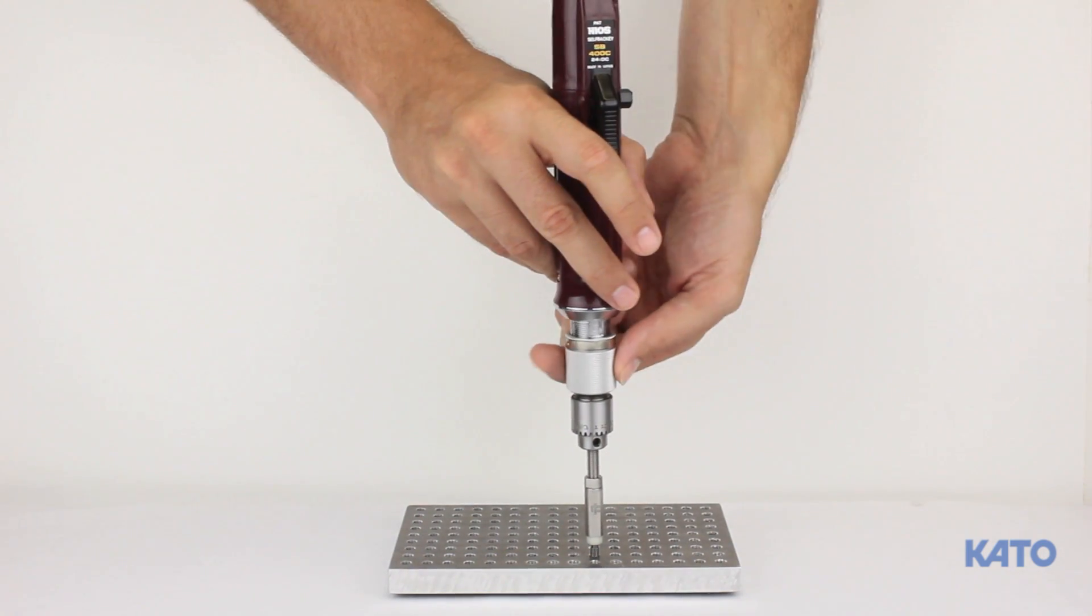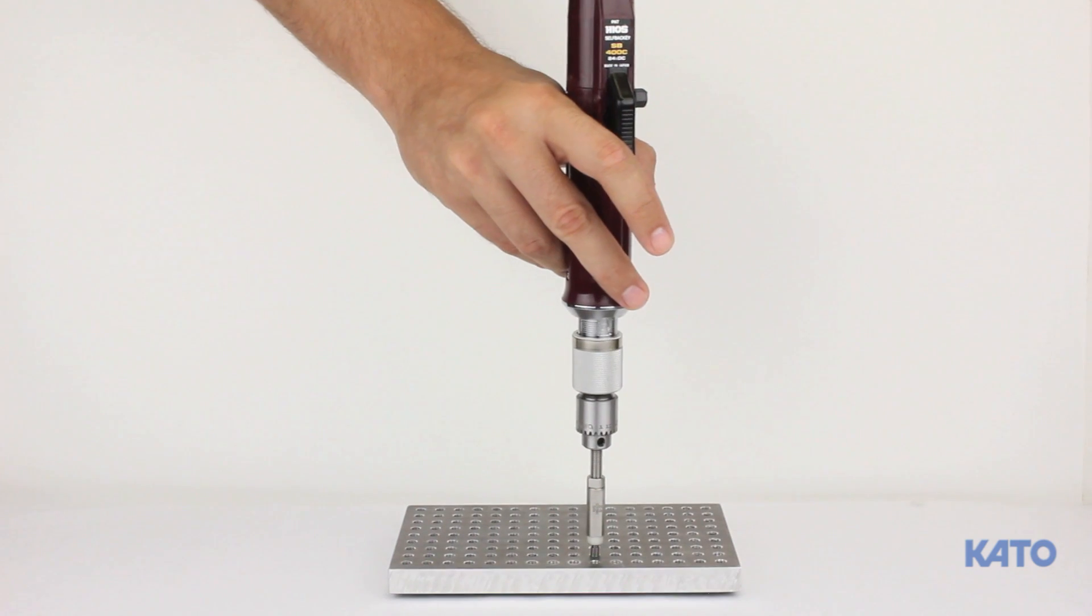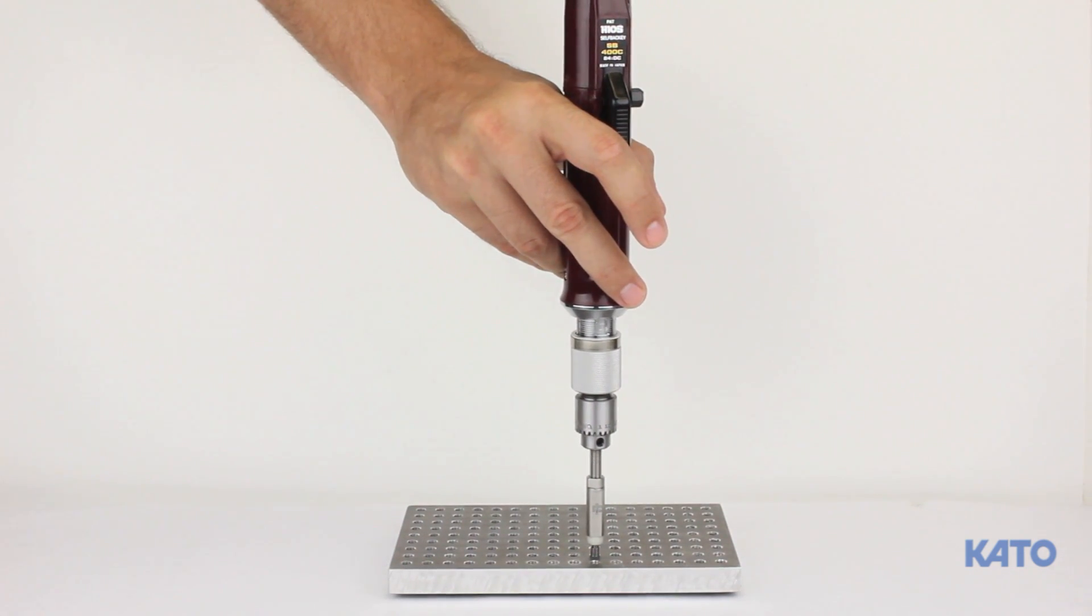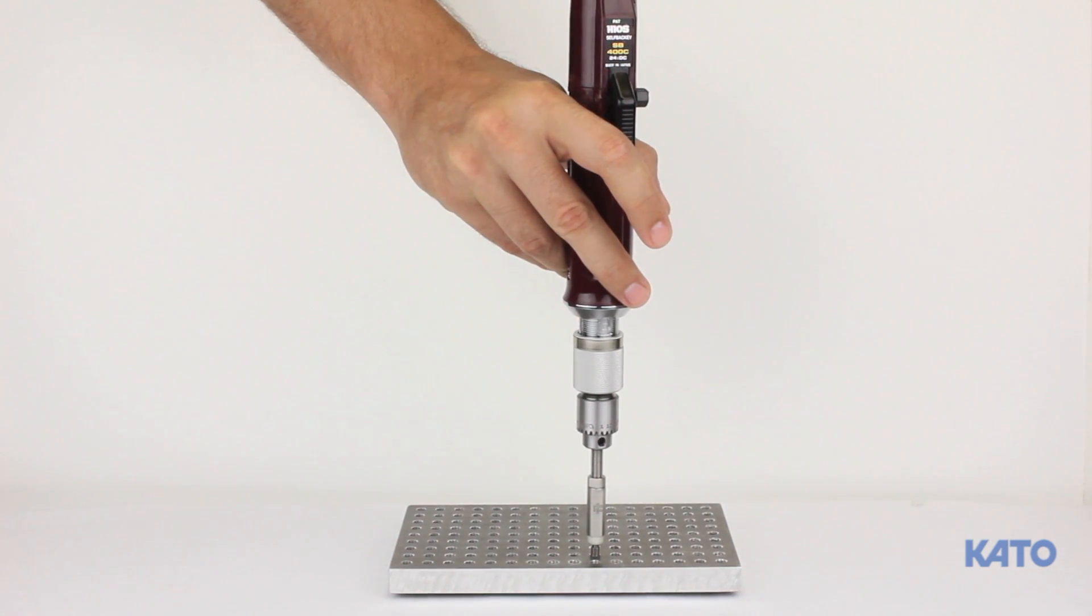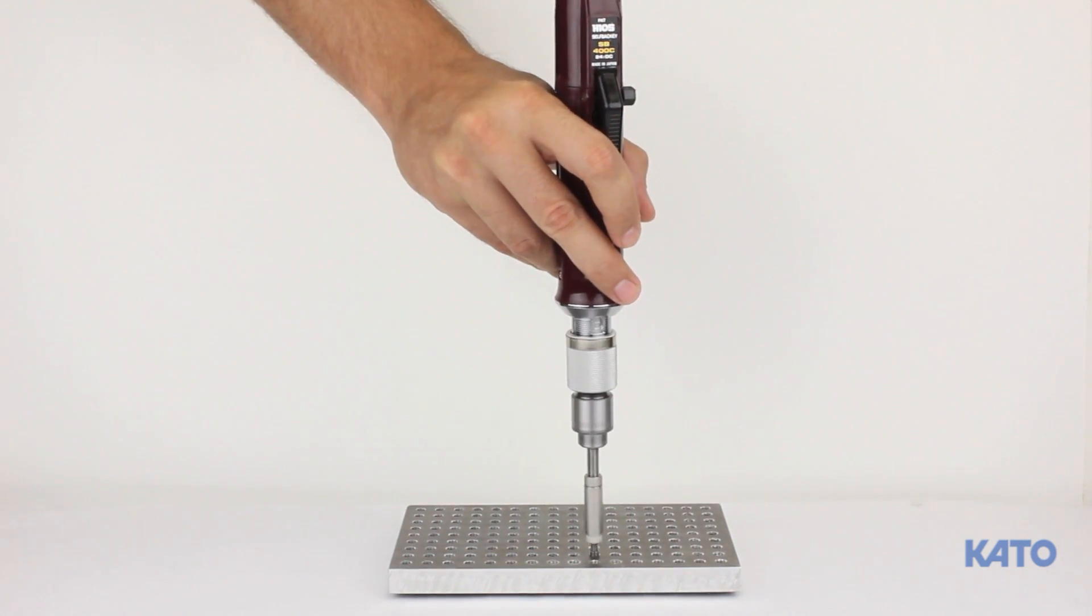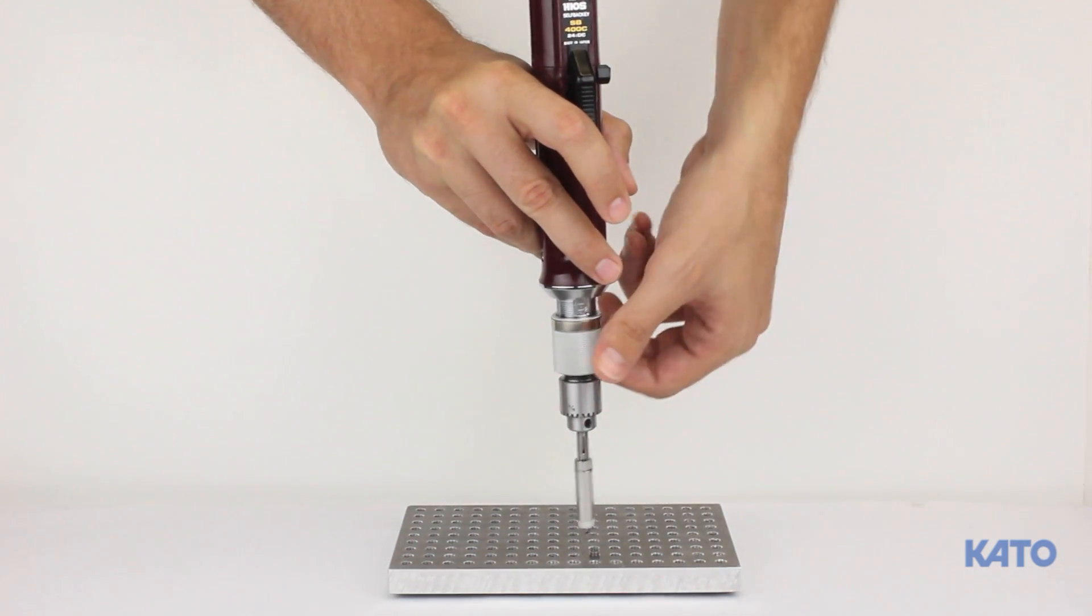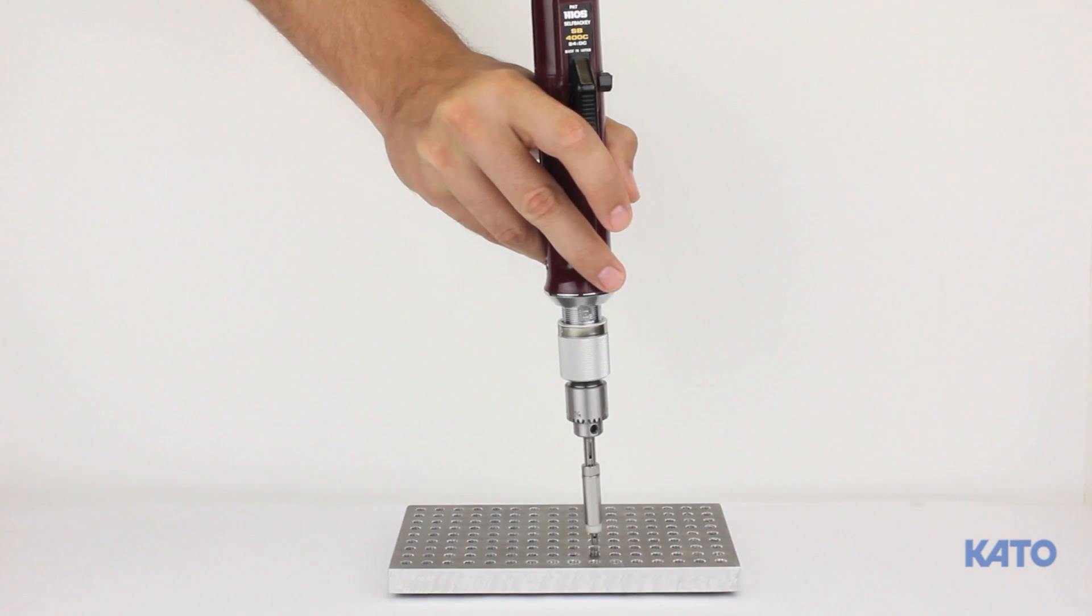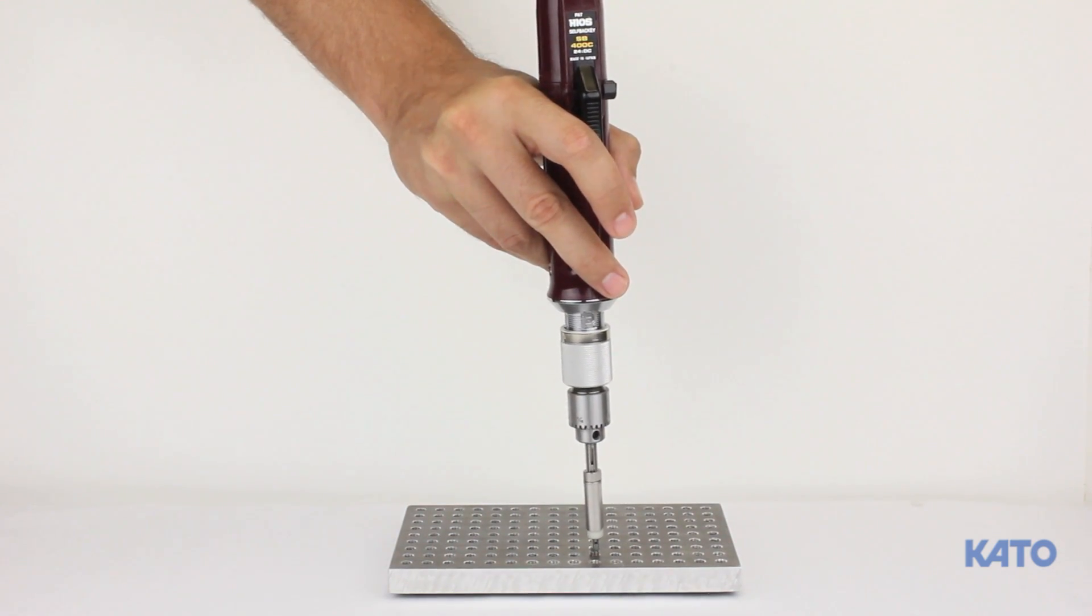Always use the minimum amount of torque that will install the insert. Begin with a very low torque setting. This will cause the driver to automatically reverse before the insert fully installs. Press the trigger to activate the electric driver. Note the insert started to enter the hole but the driver reversed automatically because the torque wasn't enough.